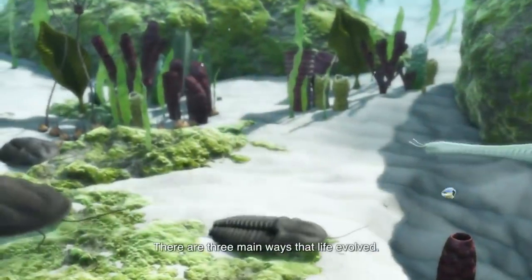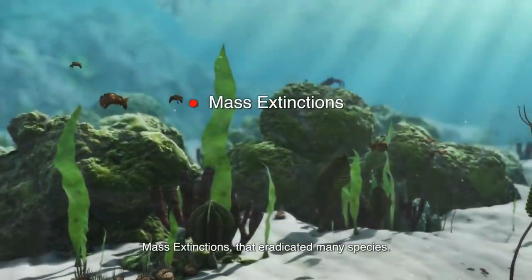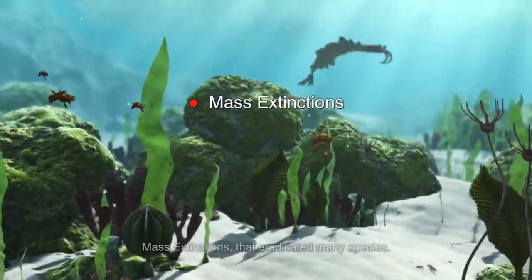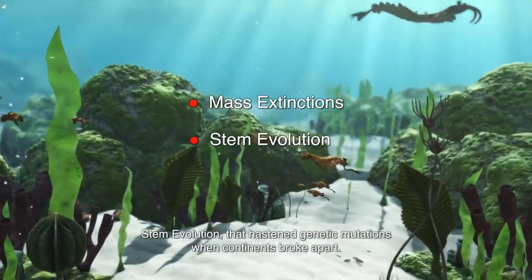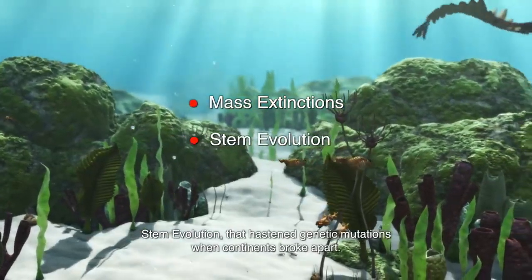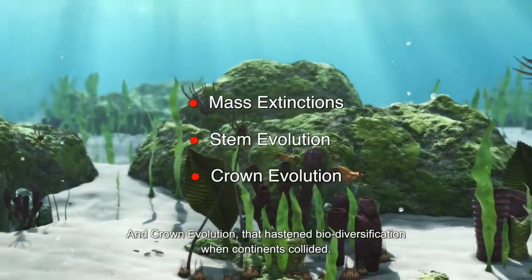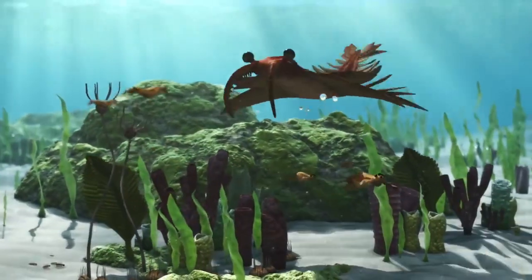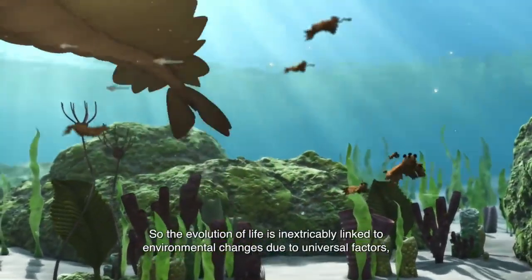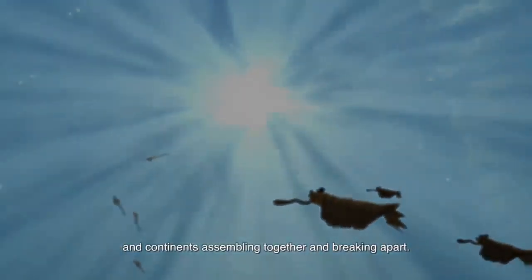There are three main ways that life evolved: mass extinctions that eradicated many species; stem evolution that hastened genetic mutations when continents broke apart; and crown evolution that hastened biodiversification when continents collided. The evolution of life is inextricably linked to environmental changes due to universal factors and continents assembling together and breaking apart.